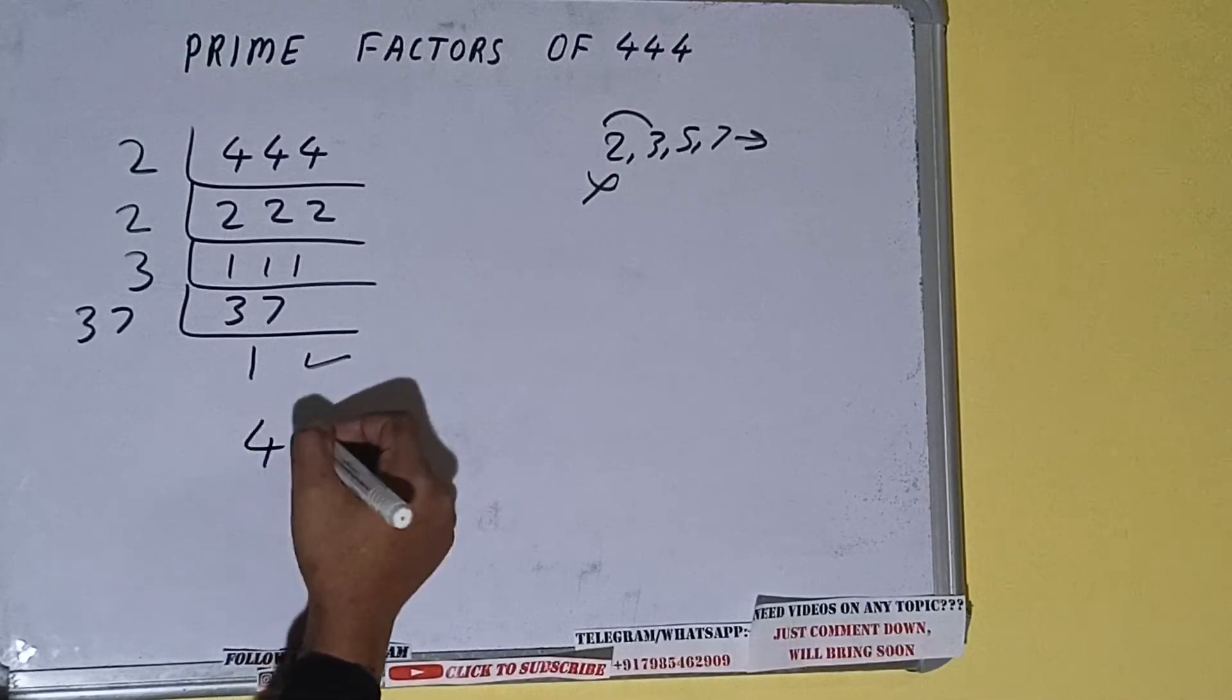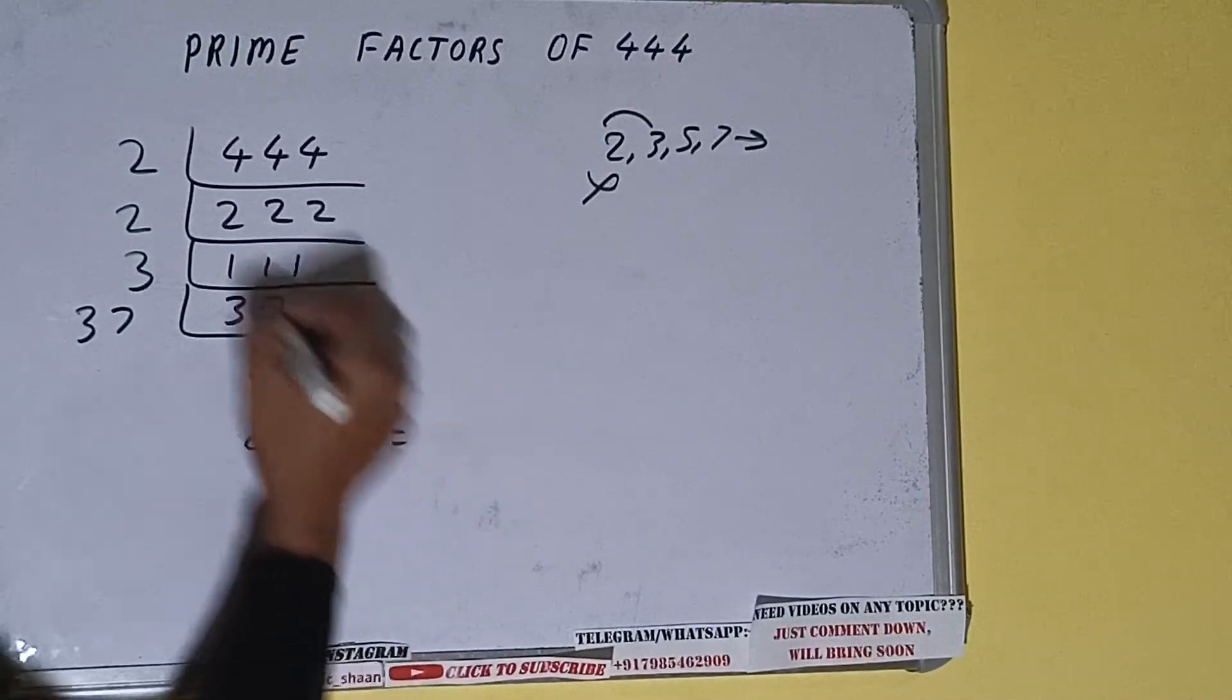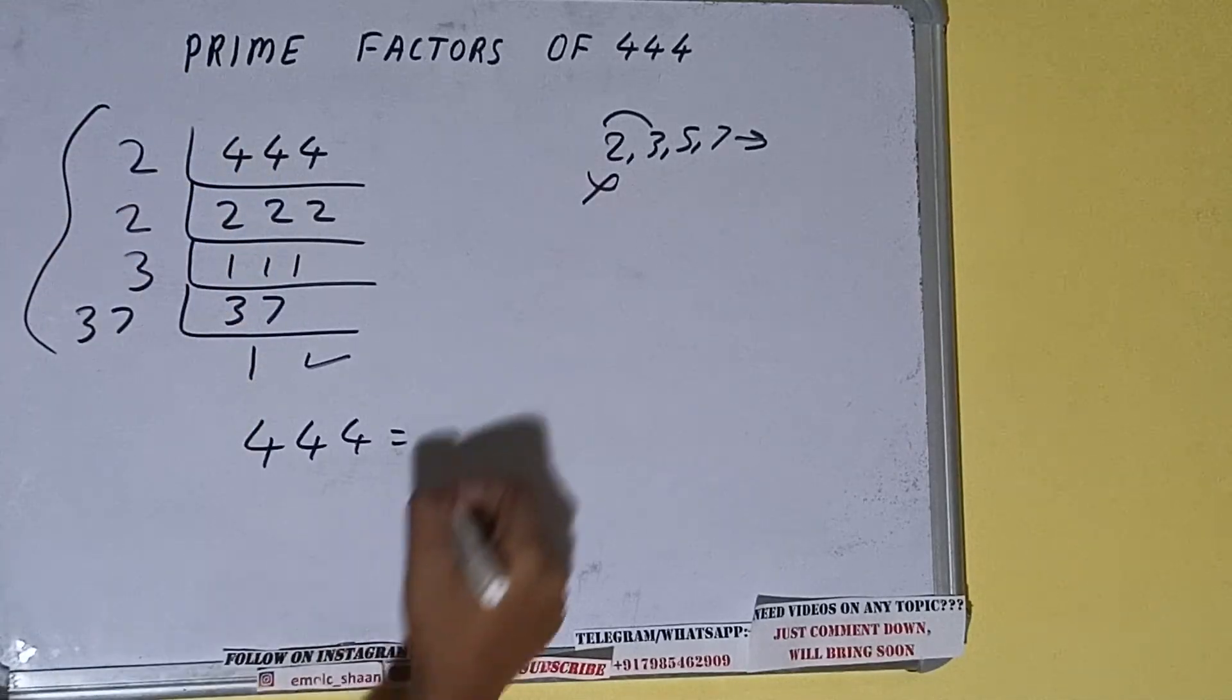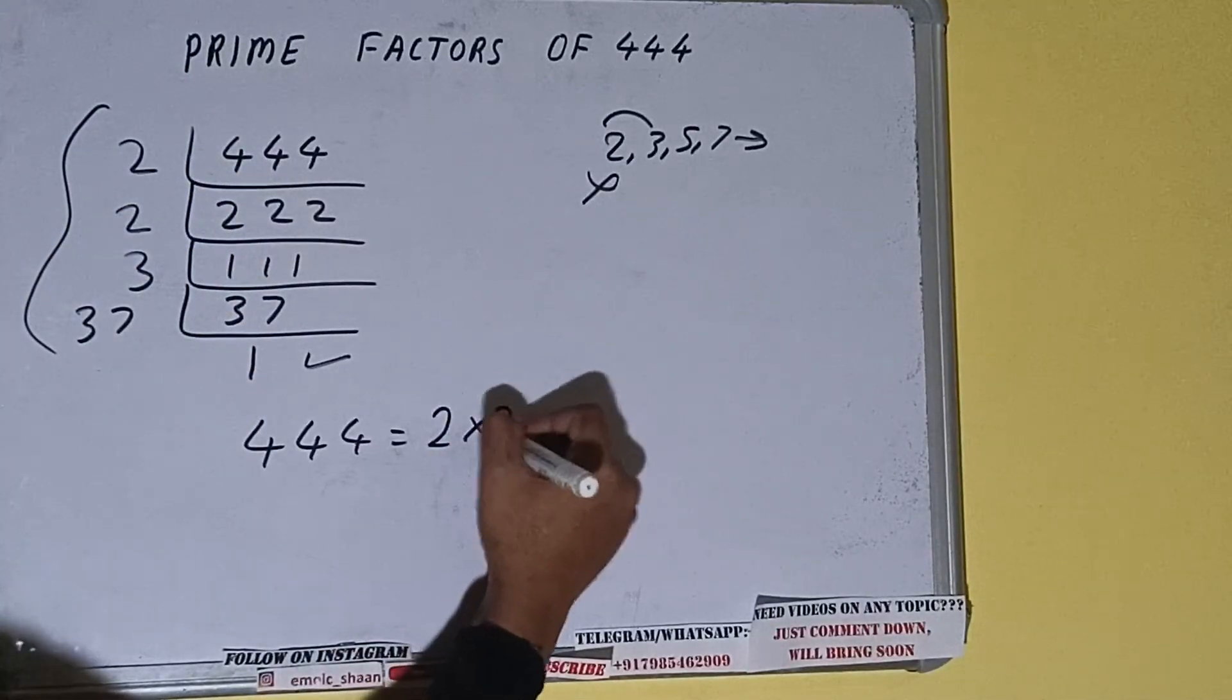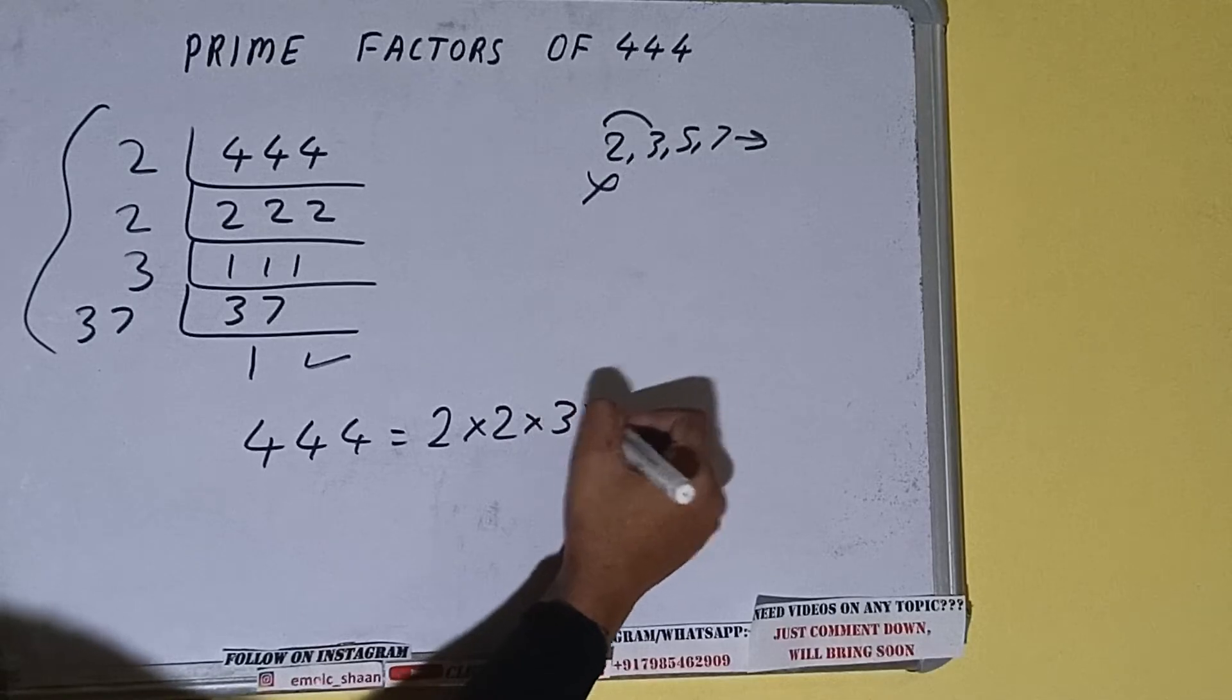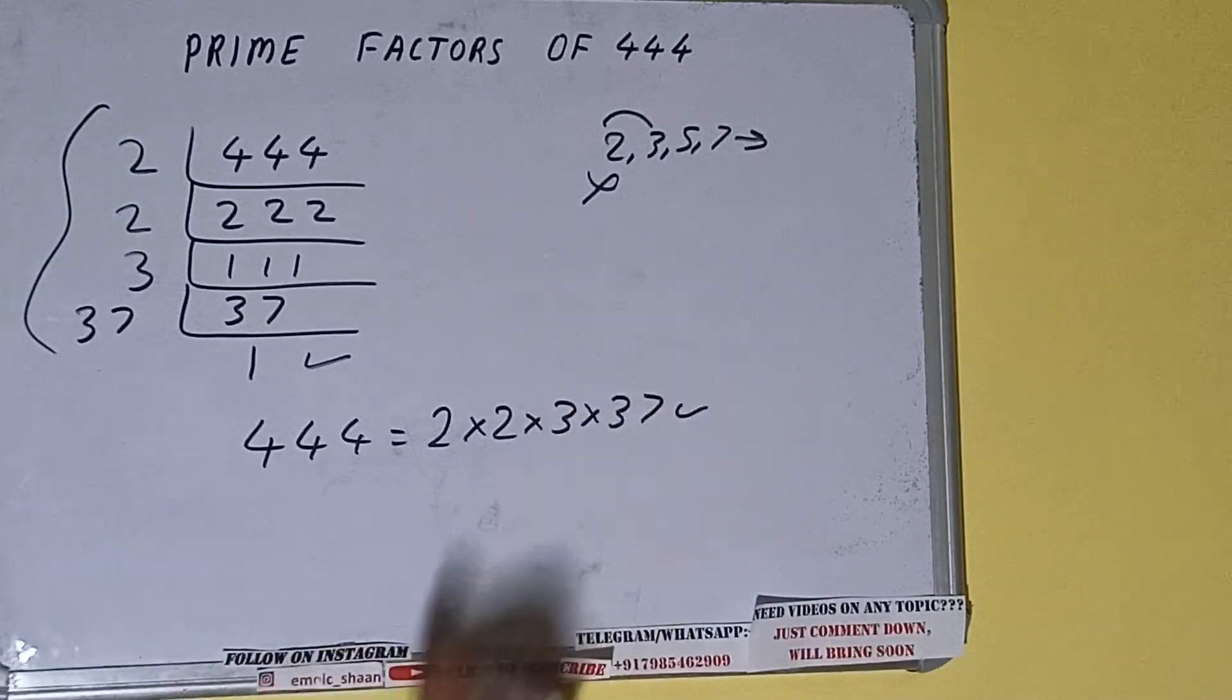That is, prime factors of 444 will be whatever we have on the left side. That is 2 × 2 × 3 × 37. That will be the answer.